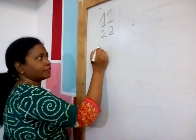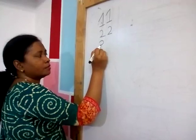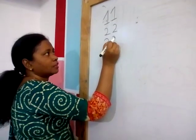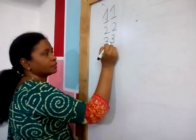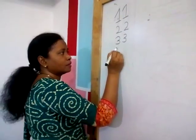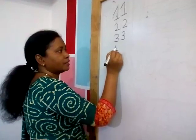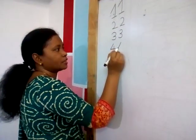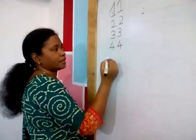Then comes 3 — make 1 curve, make another curve. Make 1 curve, make another curve. Then comes 4 — slanting line, sleeping line, standing line. Slanting line, sleeping line, standing line.